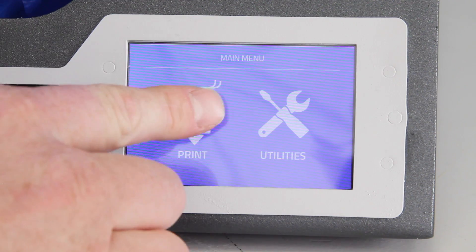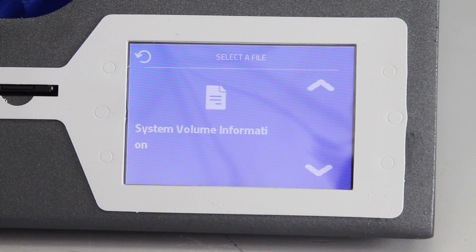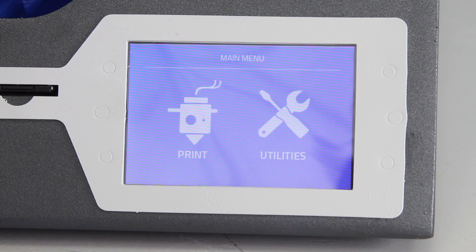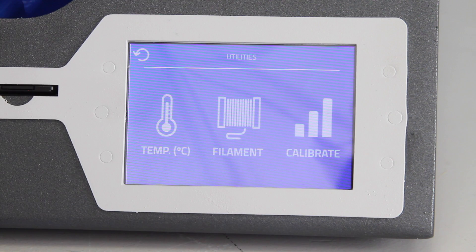So on the touchscreen, we have a print button where you can print any file from the SD card, a utilities button where we can preheat the nozzle temperatures, change filament, or calibrate the bed.